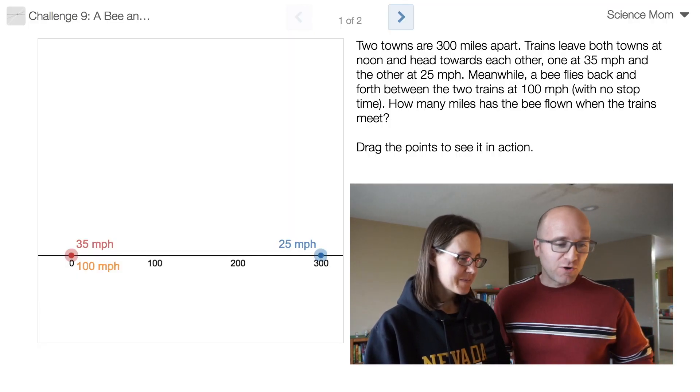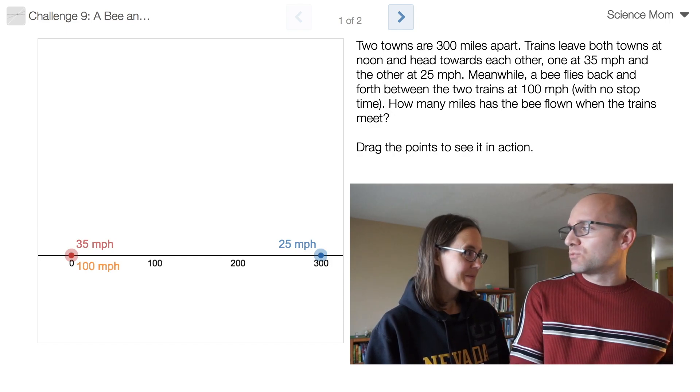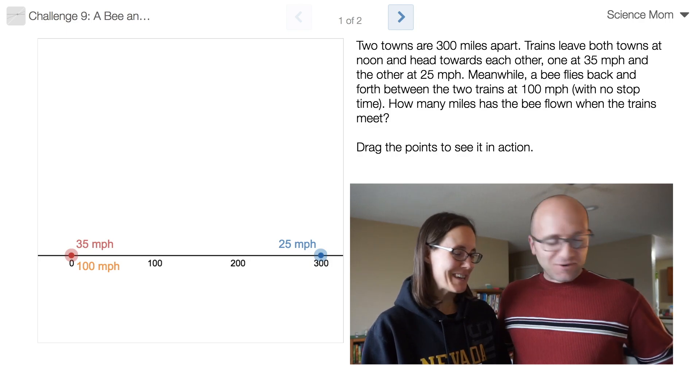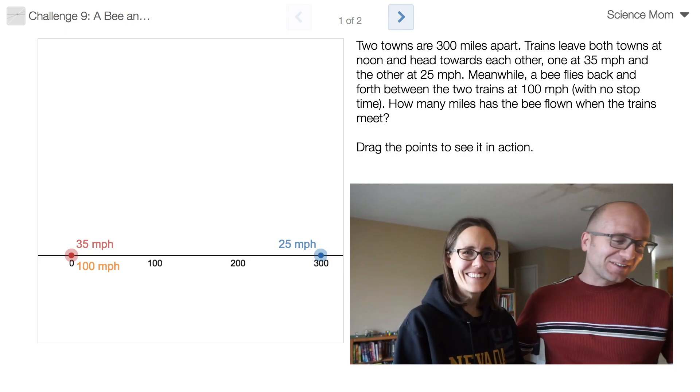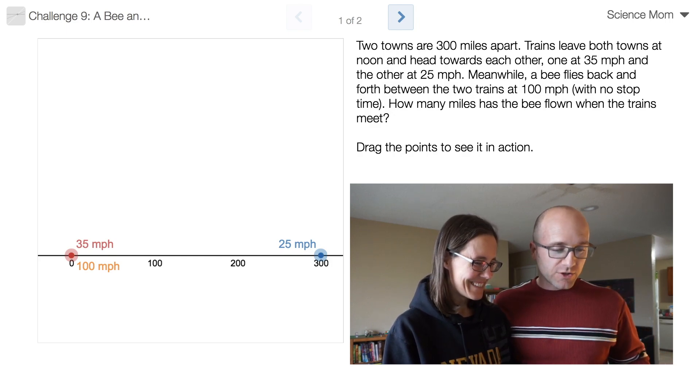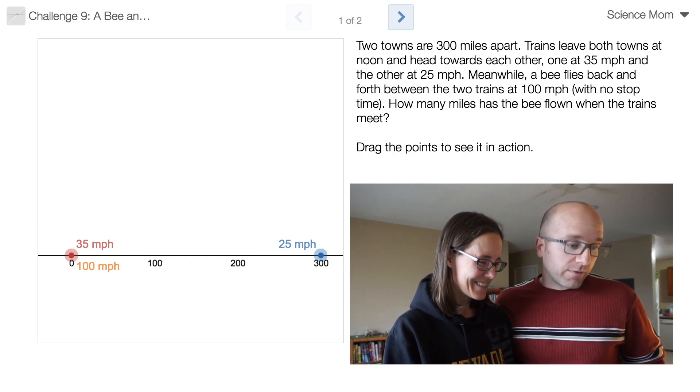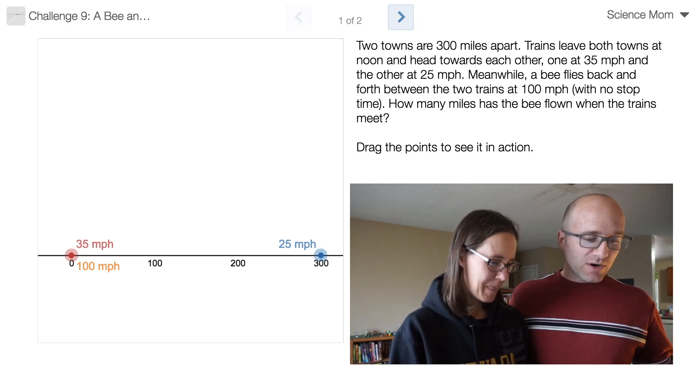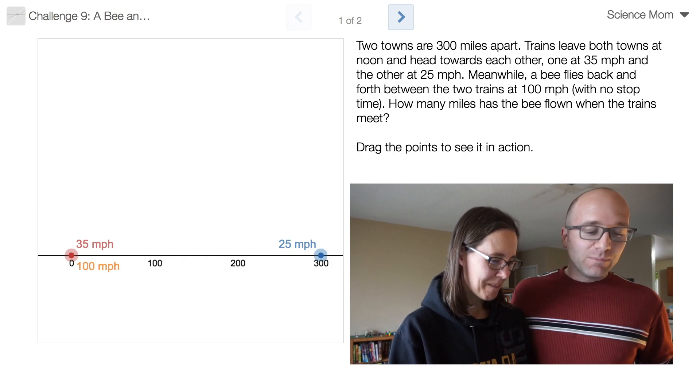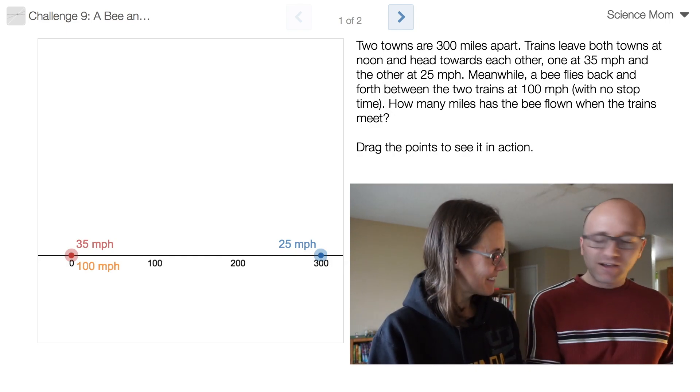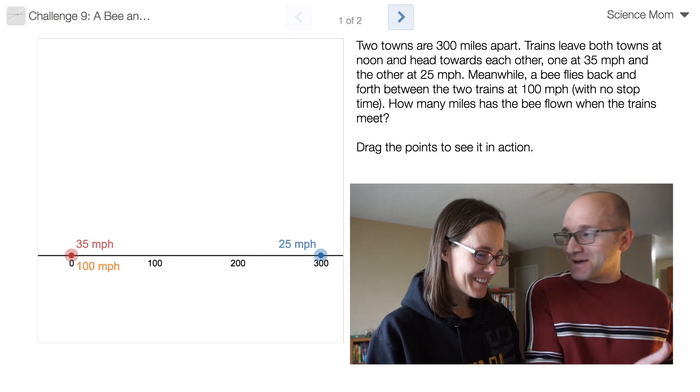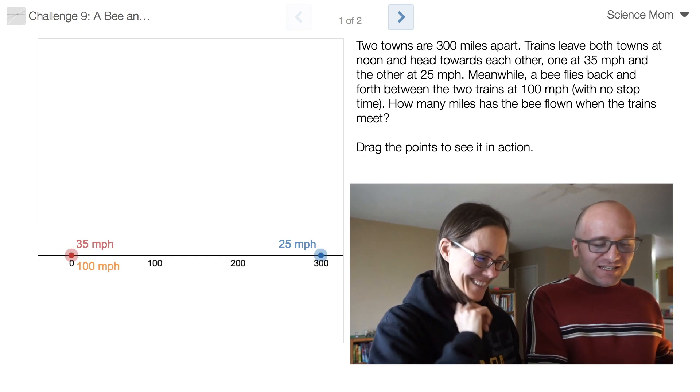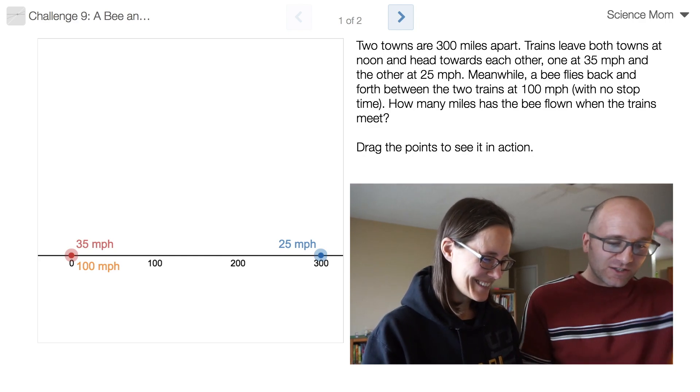This is one of those classic math problems where you have two trains headed towards each other on a collision course. I never liked those problems. Let's see if you can handle this one. The towns are 300 miles apart where the trains start from. The first train is traveling at 35 miles per hour, the second train is traveling at 25 miles per hour, and in between these trains we've got a bee flying back and forth between these trains at 100 miles per hour with no stop time. The question is, how many miles has the bee flown when the trains meet?